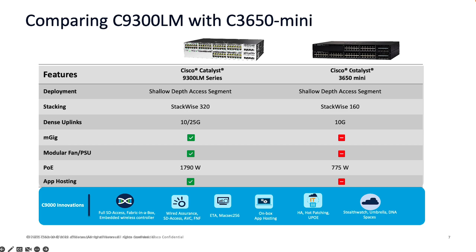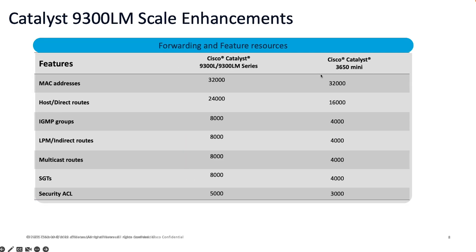Comparing the 9300 LM series with the legacy 3650 mini series switches, there are plenty of innovations on both the hardware and software side. In terms of stacking, we have doubled the stacking bandwidth to 320 Gbps. Similarly, on the uplink side, we have scaled up to 25G of bandwidth. All the Catalyst 9000 innovations supported on the 9300L have been replicated on the 9300 LM series to ensure the same flexibility, visibility, and assurance from the network. The scale has also been enhanced on the 9300 LM series compared to the legacy 3650 mini.